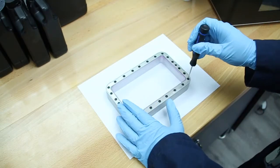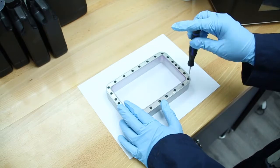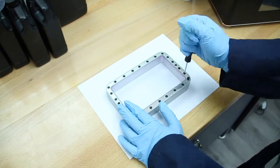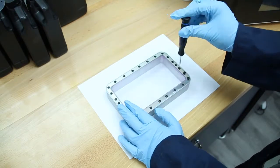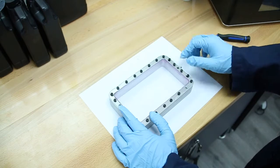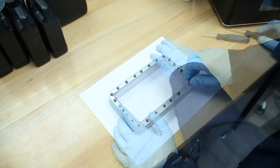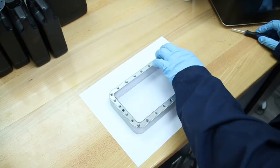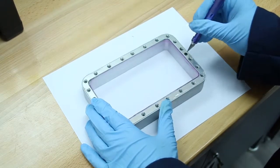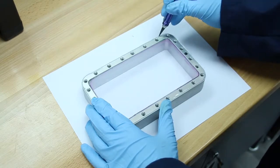Start by removing all the screws from the vat. Remove the frame by lifting up the sides.